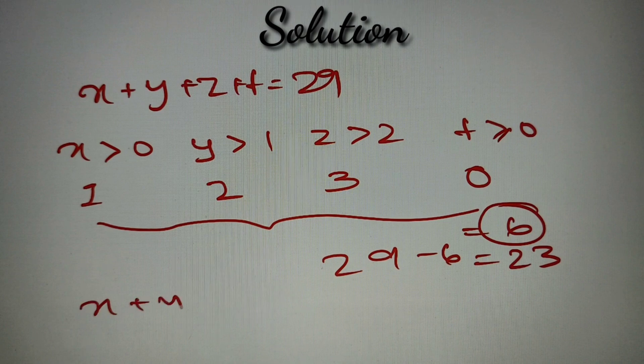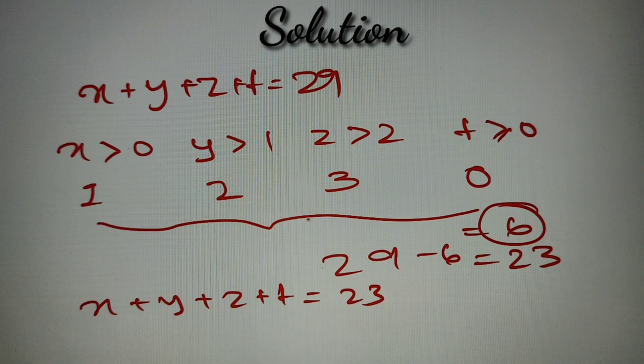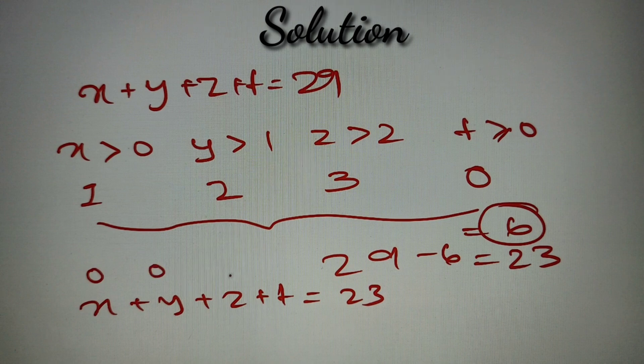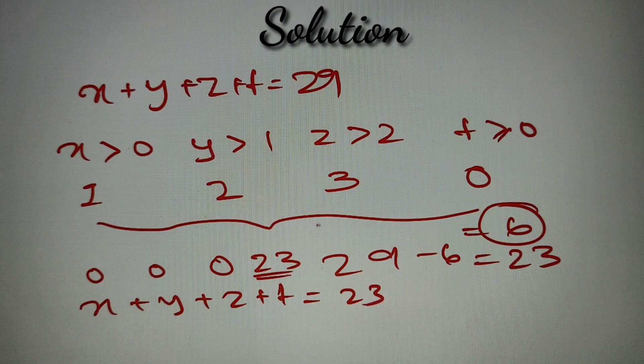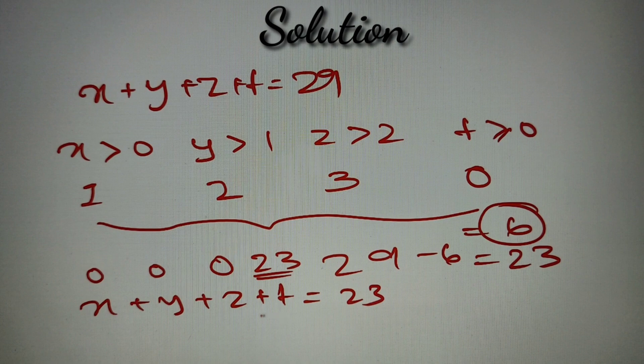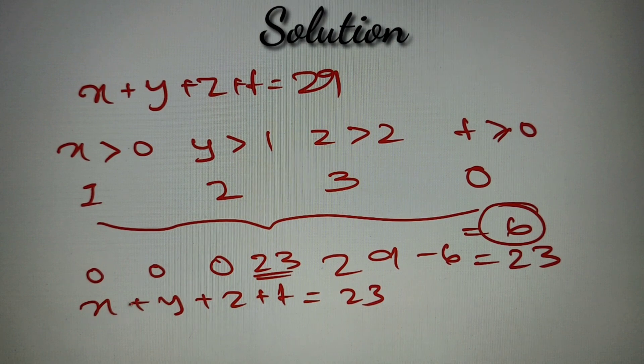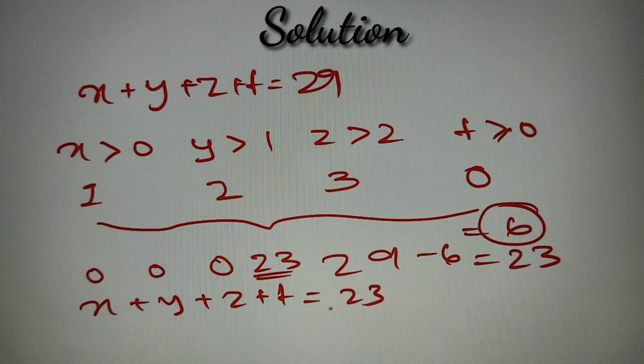Now we have got that x plus y plus z plus t is equal to 23 and they have got the minimum values. And now even if I give any one of them as 0 and the 2nd as well as 0, 3rd as well as 0, and all 23 to any one of them, then also my condition will satisfy and my integral solution will be valid. So in such cases, when any of them can get 0 and any one of them get all the values, we have to find the total number of non-negative integral solutions.